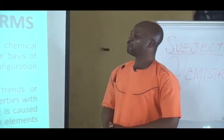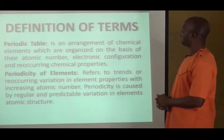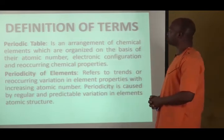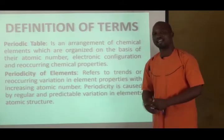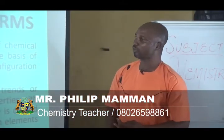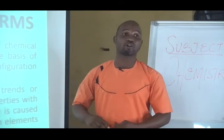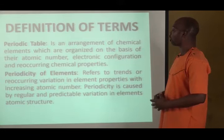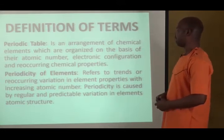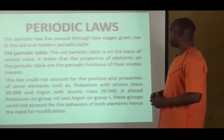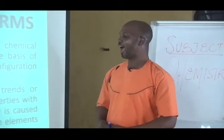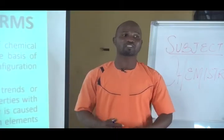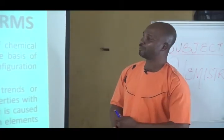The definition of terms: The Periodic Table is an arrangement of chemical elements which are organized on the basis of their atomic number, electronic configuration, and reoccurring chemical properties. The periodicity of elements refers to the trend or reoccurring variation in elements' properties with increasing atomic number. Periodicity is caused by regular and predictable variation in the elements and their atomic structure. The atomic structure of elements helps us tell the group and period an element is placed on.